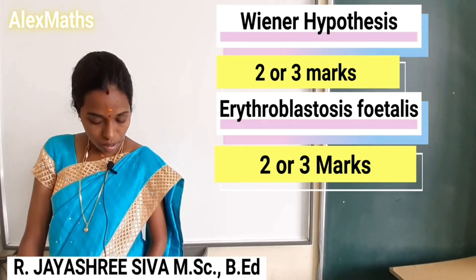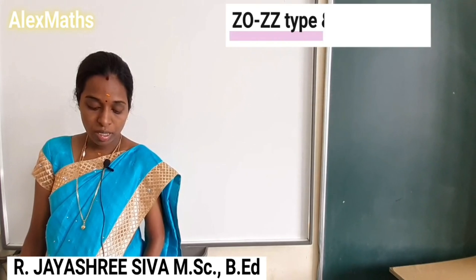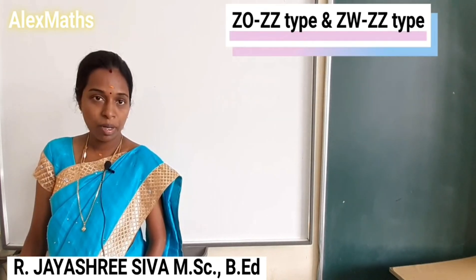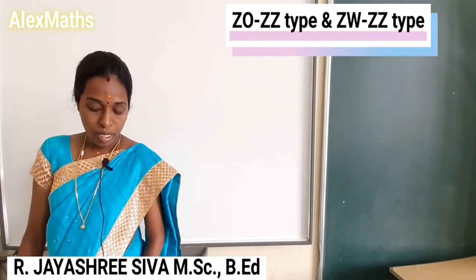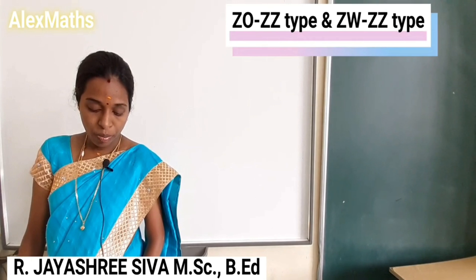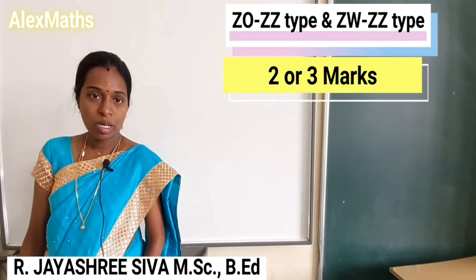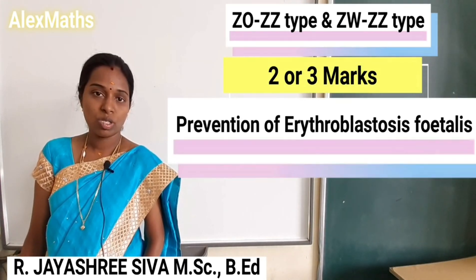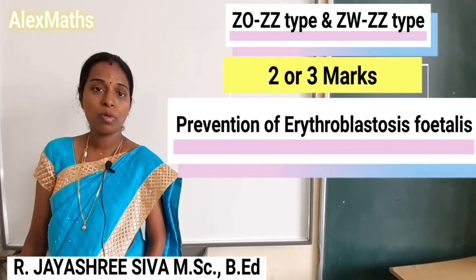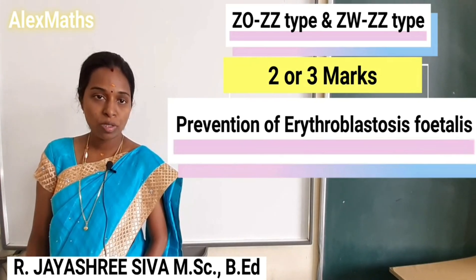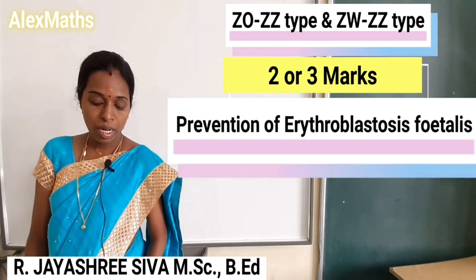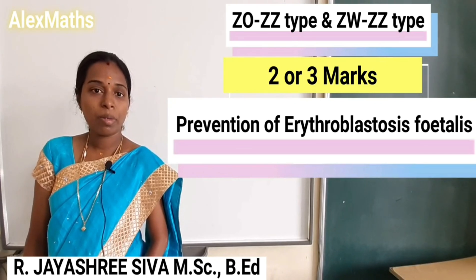There are also ZOZZ and ZWZZ type questions worth 2 or 3 marks — that means prevention of Erythroblastosis Fetalis. Suppose the baby has the opposite Rh factor — how do we prevent it? Prevention of Erythroblastosis Fetalis is a 2-mark or 3-mark question.